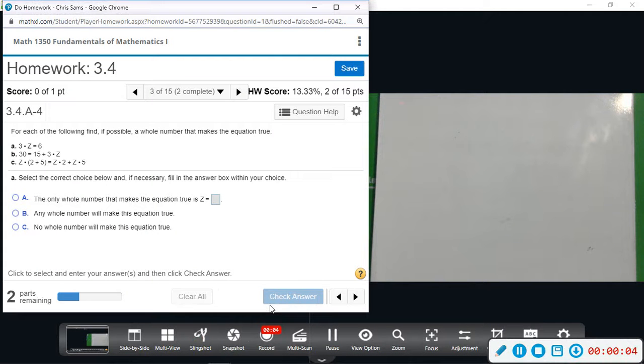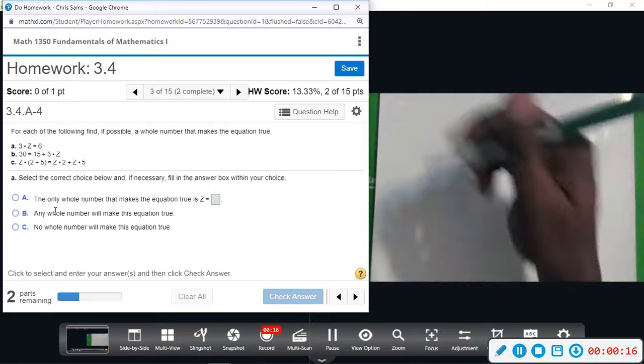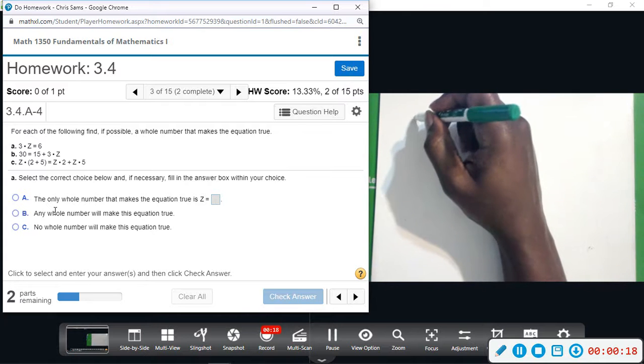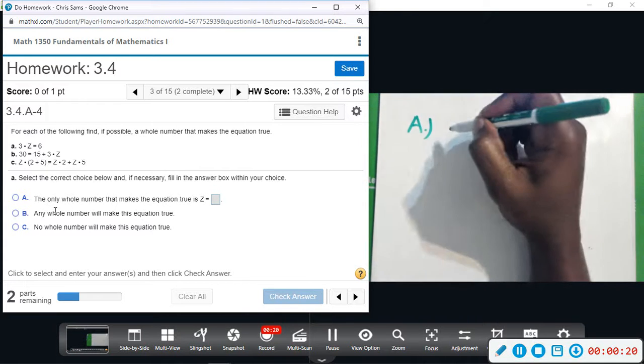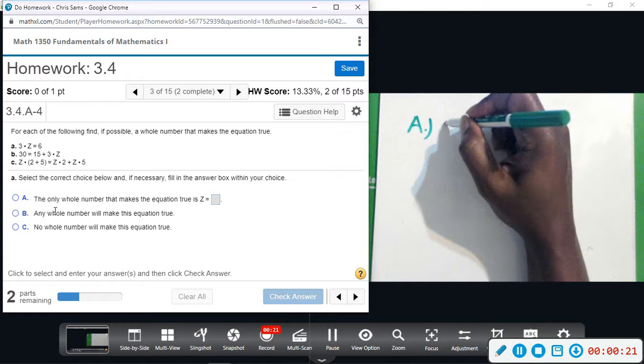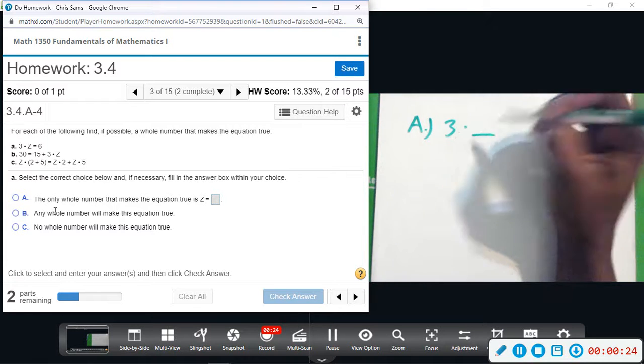Okay, number three. We want to do for each of the following, find if possible a whole number that makes the equation true. So the way we teach this is we begin to work backwards. Sometimes you might be able to figure these out. So part A, we have three times some unknown, so leave it blank, equals six.